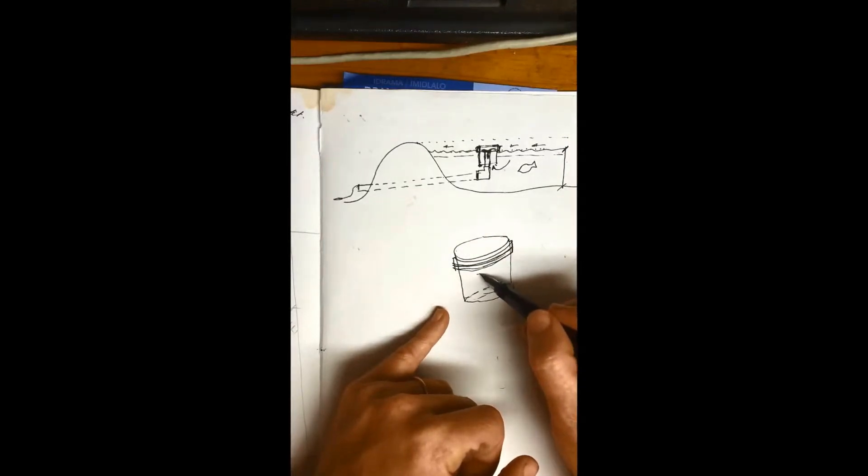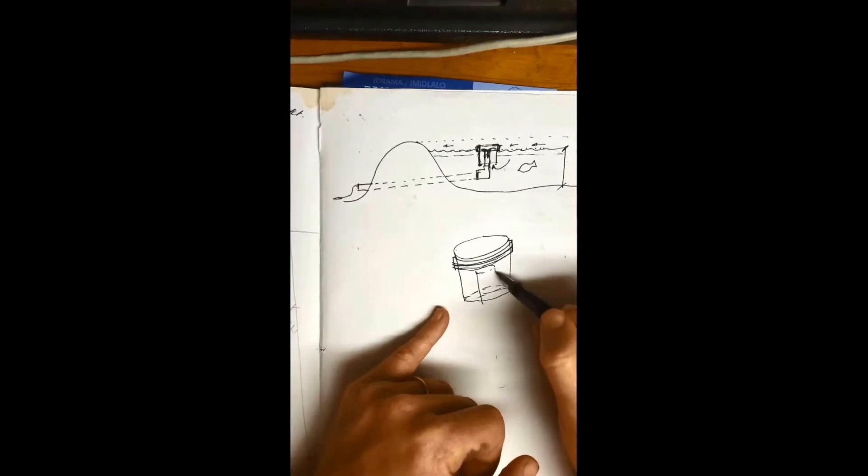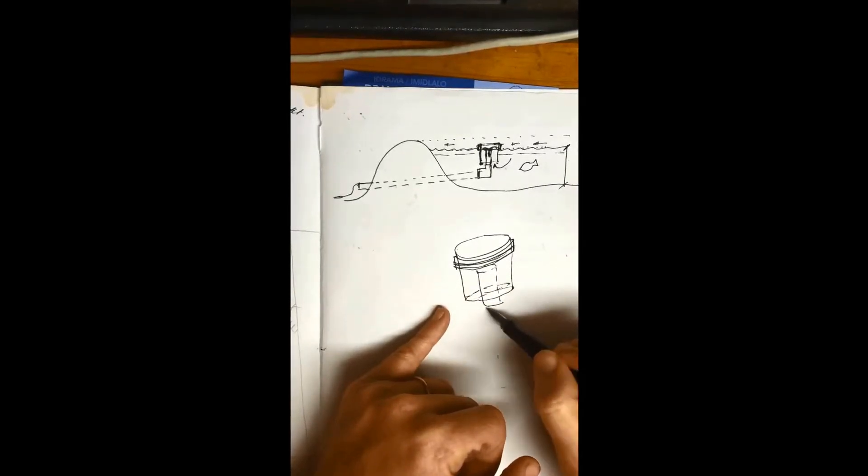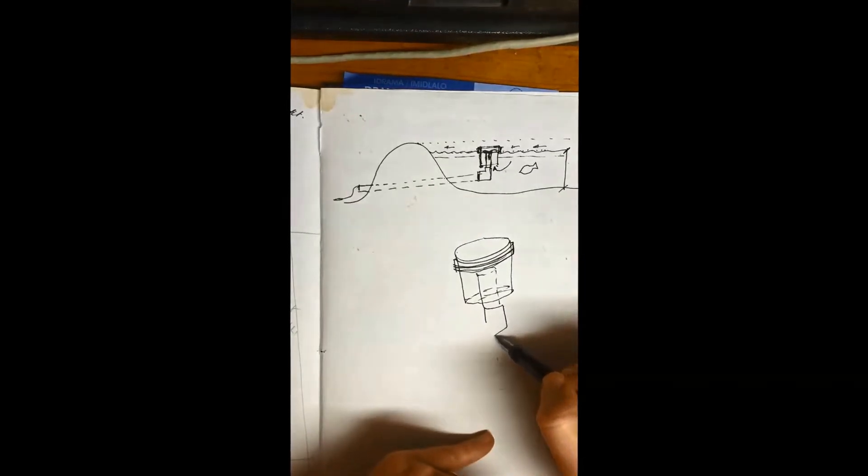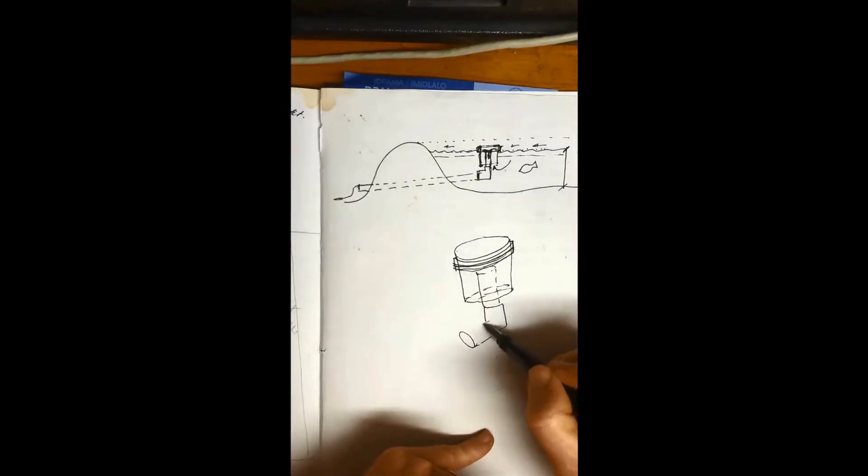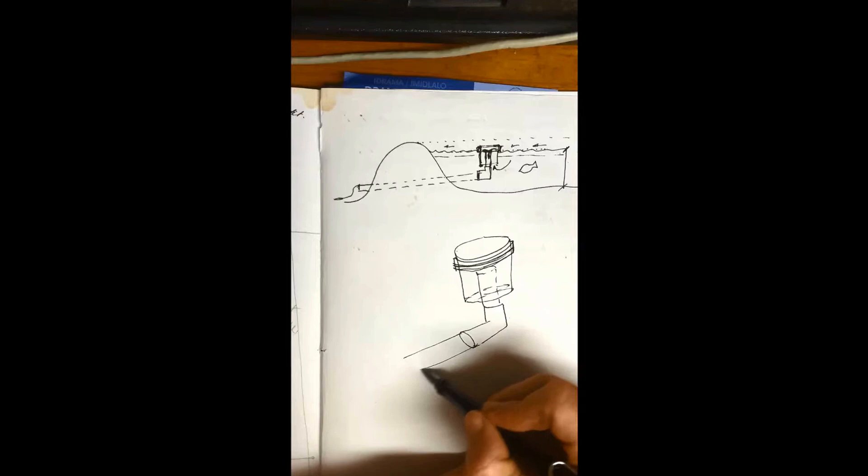That's then inserted over the 100mm overflow pipe like that. The collar sits something like that. And that goes to the dam.